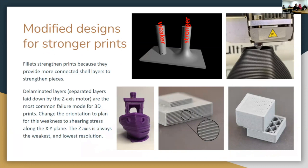If you're designing a column coming up out of a surface, it's tempting to design it as a cylinder that comes straight up — but it's much stronger to put a chamfer or fillet at the base. Layer lines are always a point of weakness in a 3D print. Without the fillet, you have a single sharp transition from horizontal to vertical, giving it a stress riser — a place where it can crack.